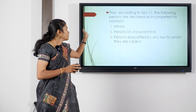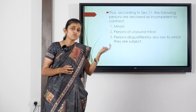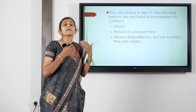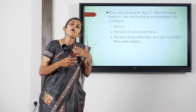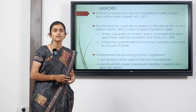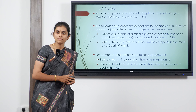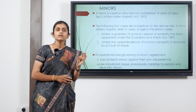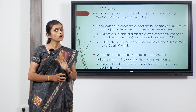To be precise, any person who is a minor, of unsound mind, or disqualified by law is an incompetent person, and any contract entered into with these people is void ab initio — void from the beginning. As per Section 3 of the Indian Majority Act 1875, any person who attains the age of 18 and above is termed a major, so anybody below the age of 18 is termed a minor.